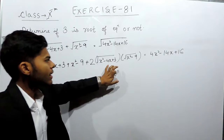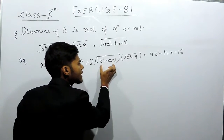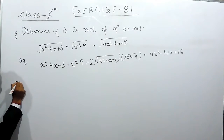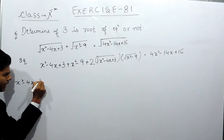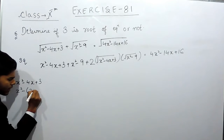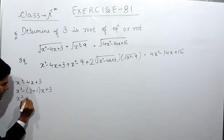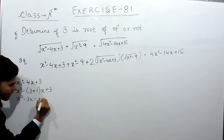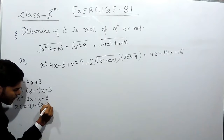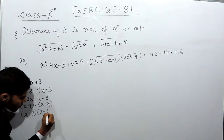Now you must be thinking how to solve this. To solve this, first of all we will factorize these quadratic equations. To factorize x² minus 4x plus 3: the factors will be (x minus 3) and (x minus 1), since x² minus 4x plus 3 = x² minus 3x minus x plus 3 = x(x minus 3) minus 1(x minus 3).